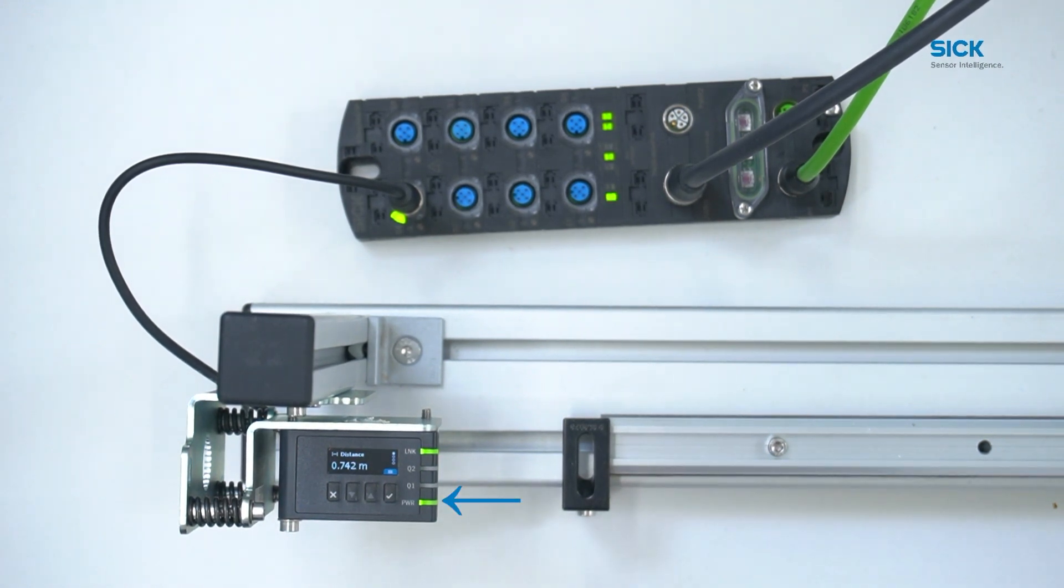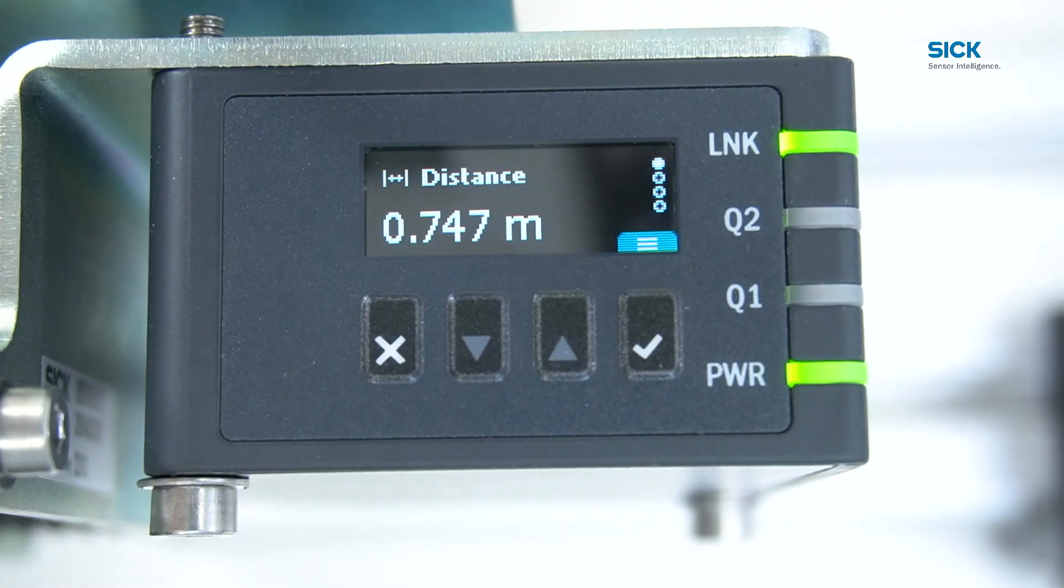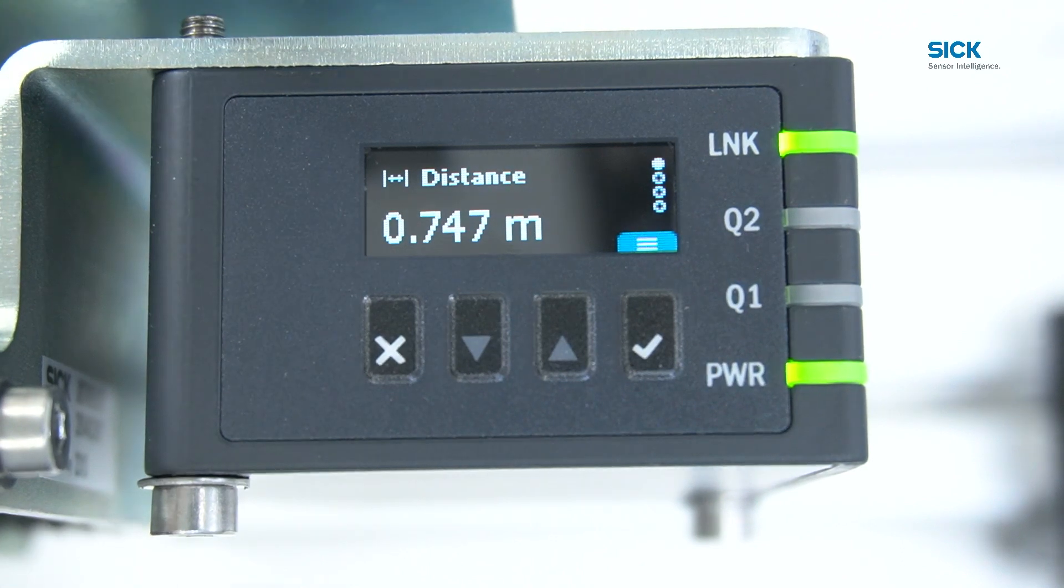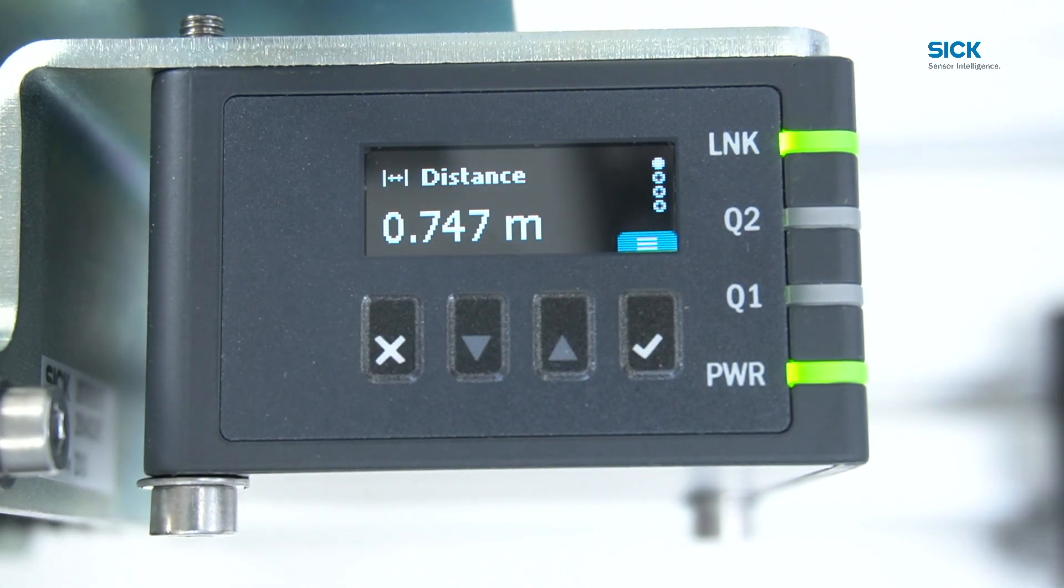The power LED turns green and you see the distance value on the display. The data connection LED flashes green as soon as communication is successfully established.